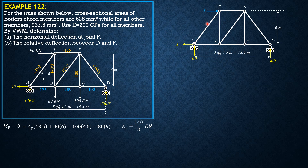Proceed to joint A: summation of forces Y equals 0. Remember slope 3-4-5. Virtual force of member AF is 5 over 9. Summation of forces X gives virtual force of AB equal to 2 thirds. Proceed to joint F: summation of forces X gives negative 2 thirds for EF. Summation of forces Y at joint F gives negative 4 over 9. Proceed to joint B: summation of forces Y gives virtual force of BE equal to 5 over 9. Summation of forces X gives BC equal to one third, so CD is also one third. CE is a zero-force member.